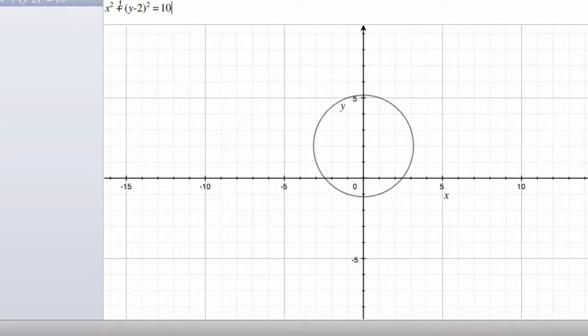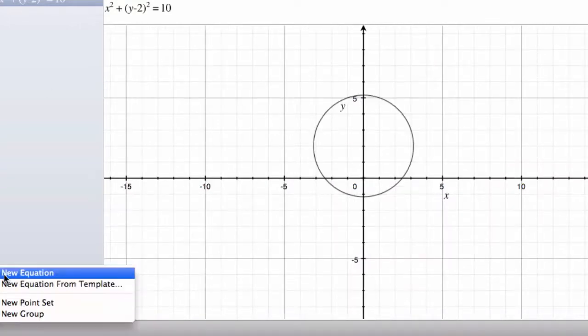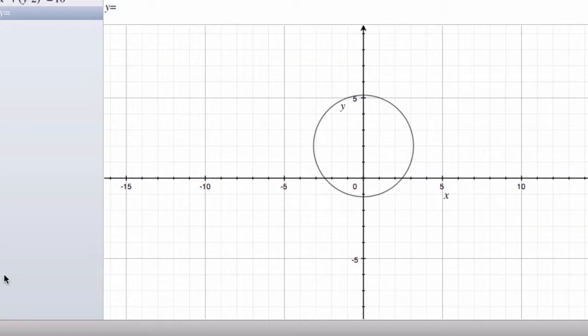There you can see it. And then our next equation, we had (x - 2) squared plus y squared equals 10. Another circle.